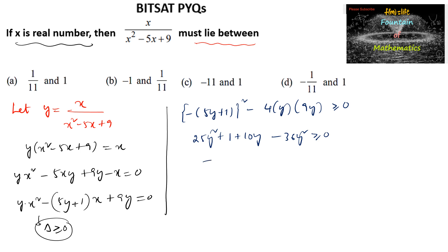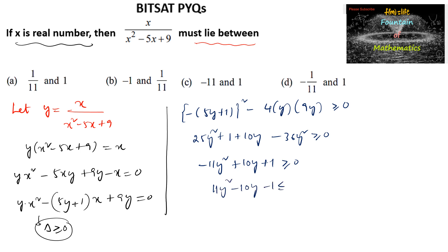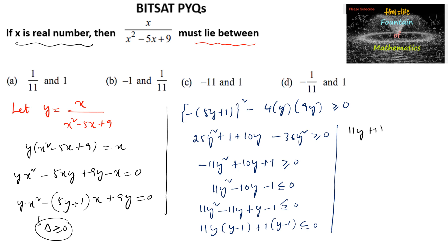Simplifying, 25 - 36 = -11, so -11y² + 10y + 1 ≥ 0, or equivalently 11y² - 10y - 1 ≤ 0. Factoring: (-11y + y - 1) ≤ 0 → (11y + 1)(y - 1) ≤ 0.